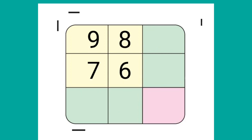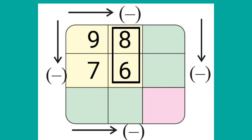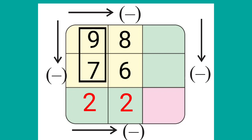Here is today's last question. As you know, at the right side, we will subtract the lower number from the upper number. 8 minus 6 is equal to 2. At the left side, 9 minus 7 is equal to 2.